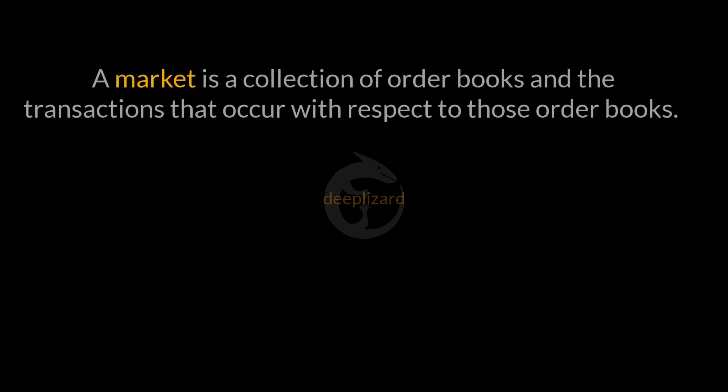With this working knowledge, we're ready to give a definition for a market: a market is a collection of order books and the transactions that occur with respect to those order books. I hope this video was helpful. Please like the video, subscribe, and support this DeepLizard channel. Thank you.